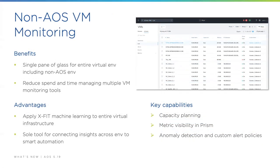Regarding non-AOS VM monitoring — this is a great enhancement to Prism Central. Not only can you monitor your own Nutanix infrastructure, but if you have a legacy three-tier infrastructure, you can now bring it into Prism Central and get insight and monitoring from it. You can apply X-Fit machine learning to the entire virtual infrastructure for capacity planning, metric visibility in Prism, and anomaly detection and custom alerts for your three-tier or entire virtual estate.